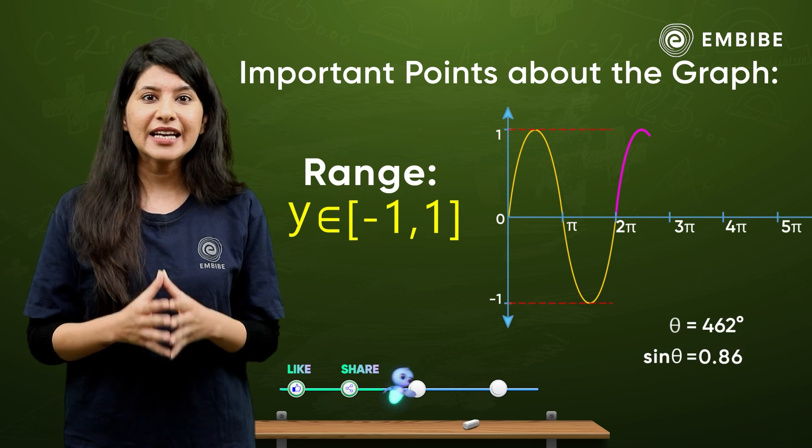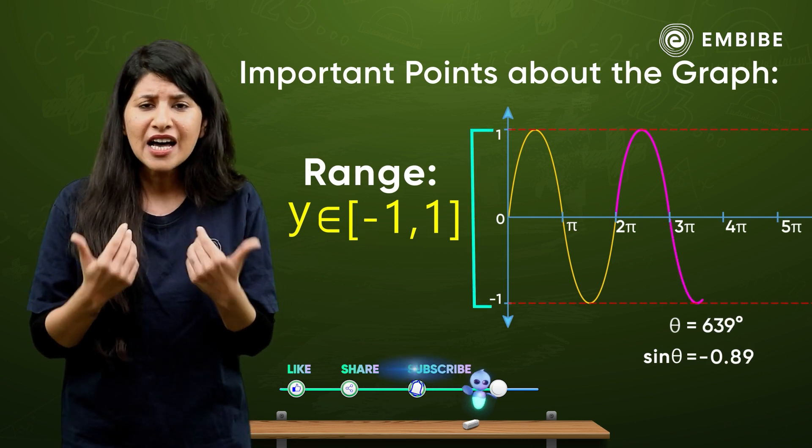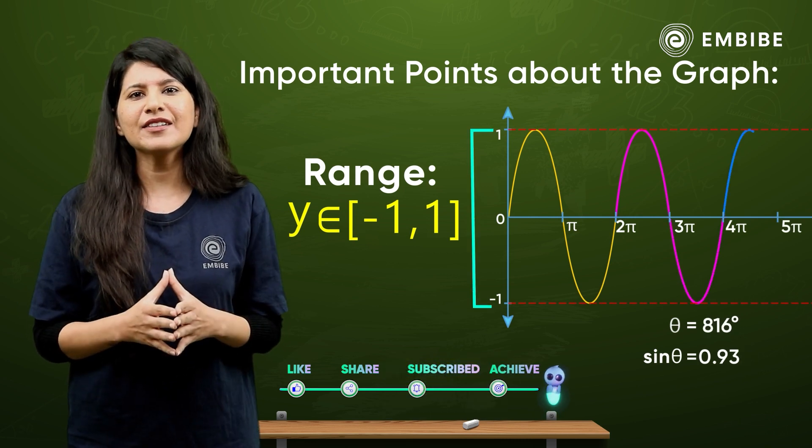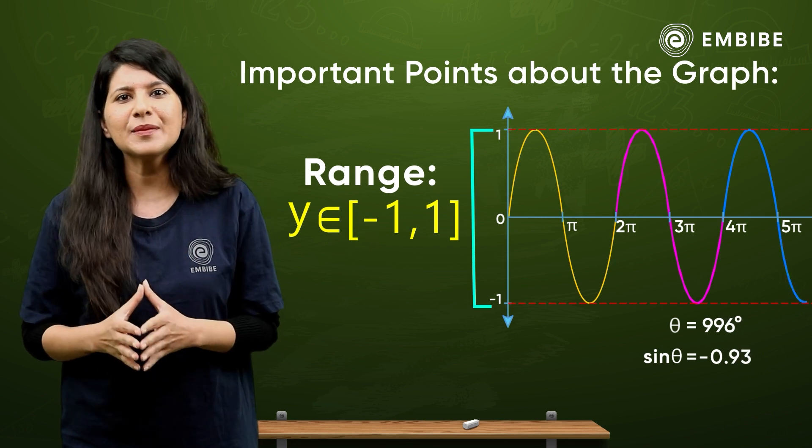Second will be our range. This graph will be clear that the sine of theta is minus 1 to 1.